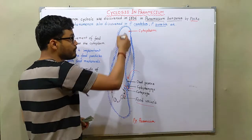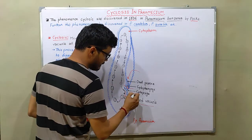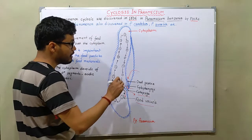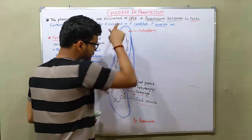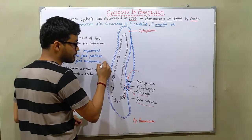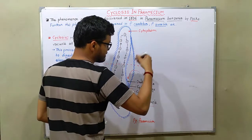After that this food vacuole is moved along with the cytoplasm and residual bodies are released in the water by the help of cytopage. The entire cytoplasm of paramecium is divided into two regions, and this region is divided by their nature of pH.